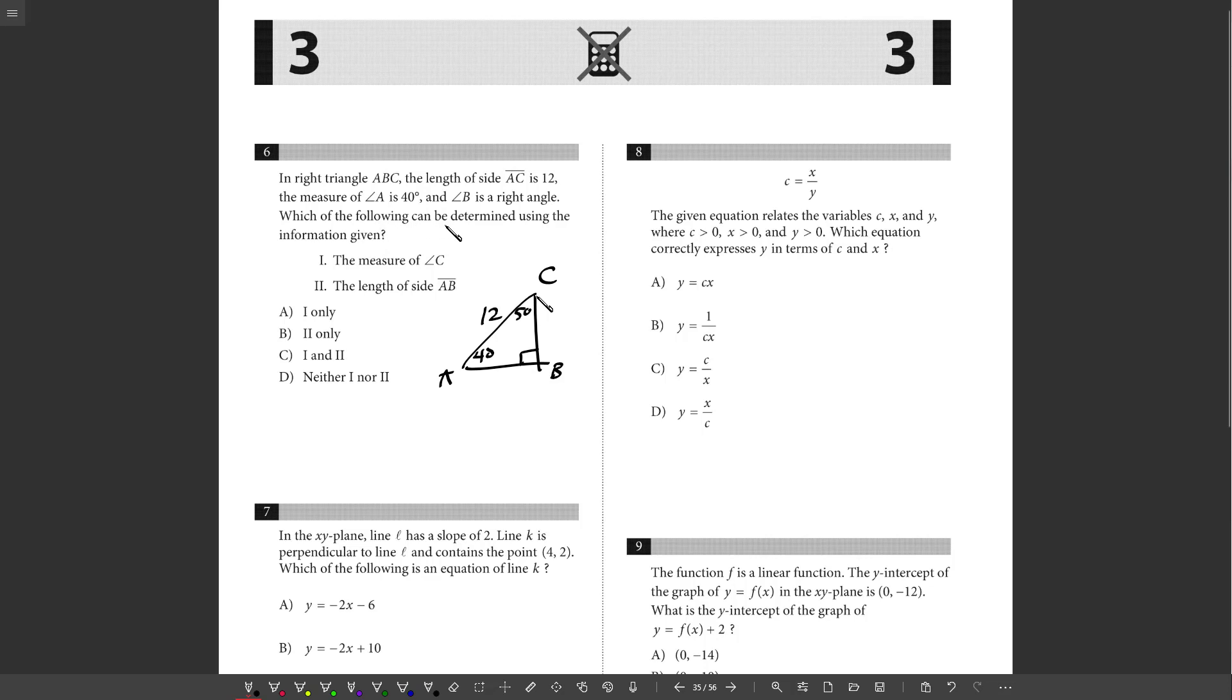B is the right angle, which the following can be determined using the information given. Can I get the measure of C? Well, yes, I got that already. So one is true.